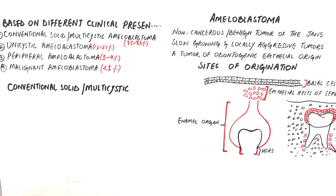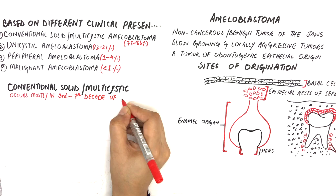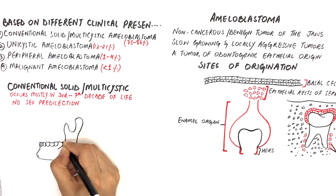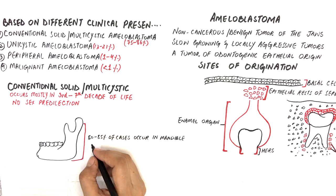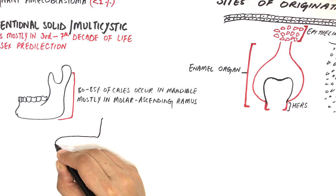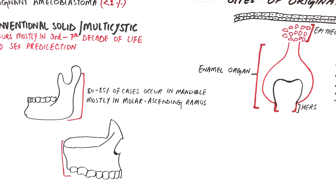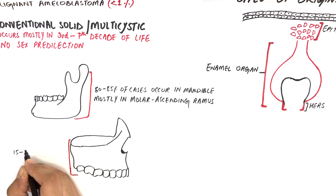The conventional solid or multicystic form occurs mostly in the third to seventh decades of life with no sex predilection. About 80 to 85 percent of all cases occur in the mandible, most often affecting the molar-ascending ramus area. The remaining 15 to 20 percent of ameloblastomas occur in the maxilla, usually in the posterior molar region.